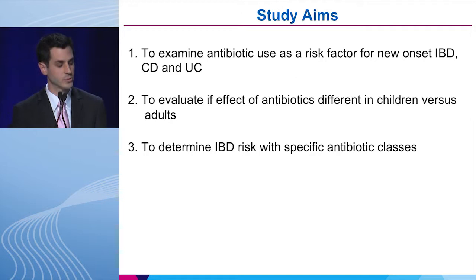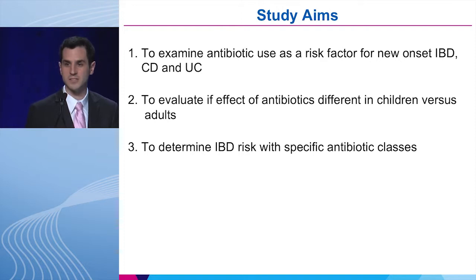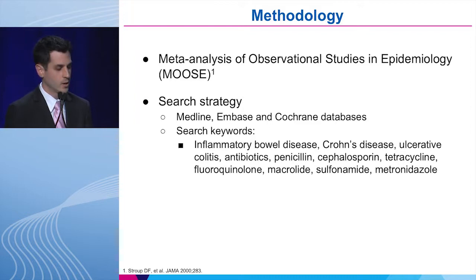Our study had three aims: one, to examine antibiotic use as a risk factor for new onset IBD, Crohn's disease, and UC; two, to evaluate if the effect of antibiotics was different in adults versus children; and three, to determine if antibiotics of specific classes had different effects on IBD risk.